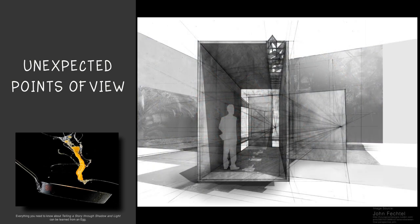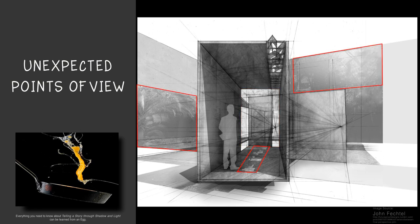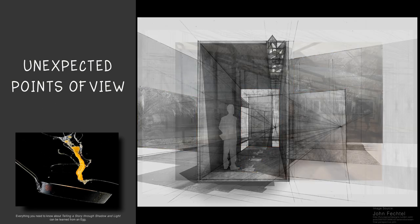In this perspective drawing by John Fechtel, shade and shadow are used to focus the view on the concept rather than the literal design, by making the framing device appear to float above the floor plane. Shade is then also used to frame the light in the distance, while patterns are used to establish atmosphere.